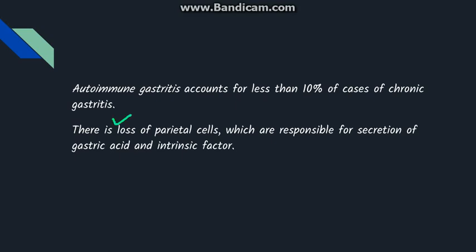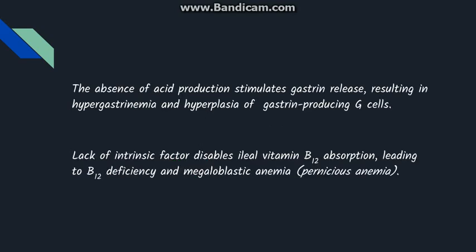In autoimmune gastritis there is loss of parietal cells. These parietal cells are responsible for the secretion of gastric acid and intrinsic factor. Due to absence of acid production, this leads to stimulation of gastrin release, causing hypergastrinemia and hyperplasia of gastrin-producing G cells.